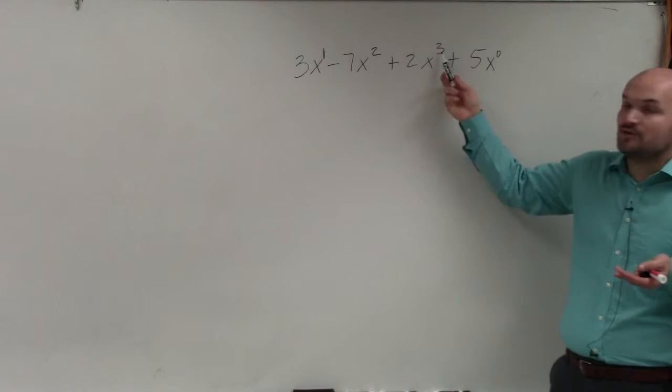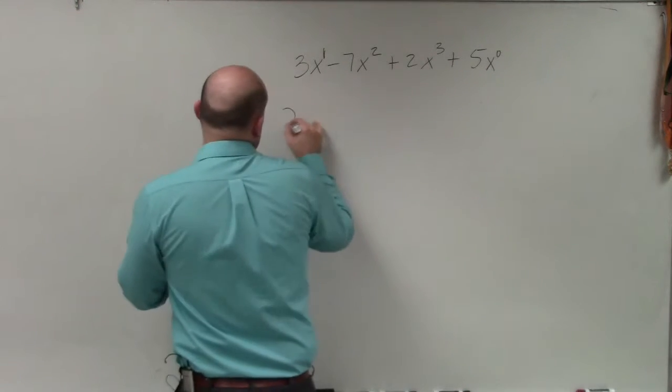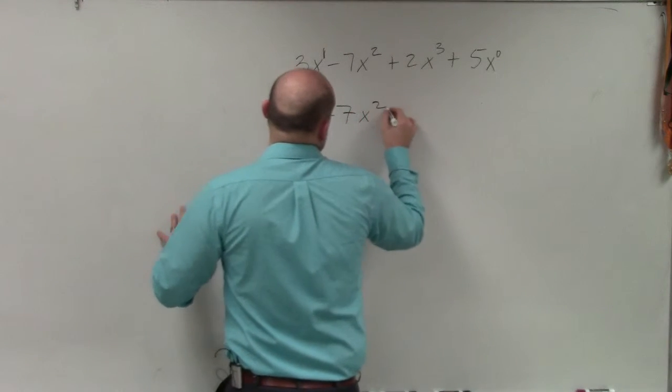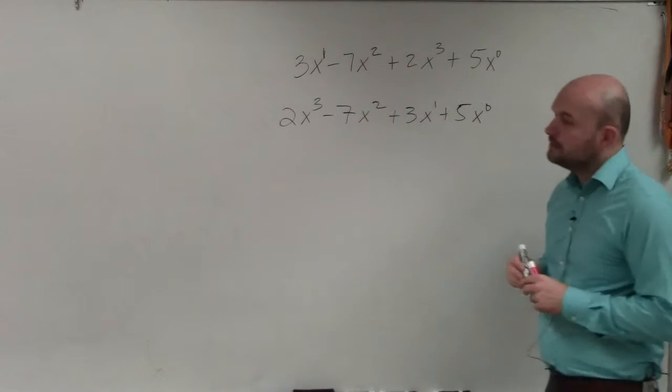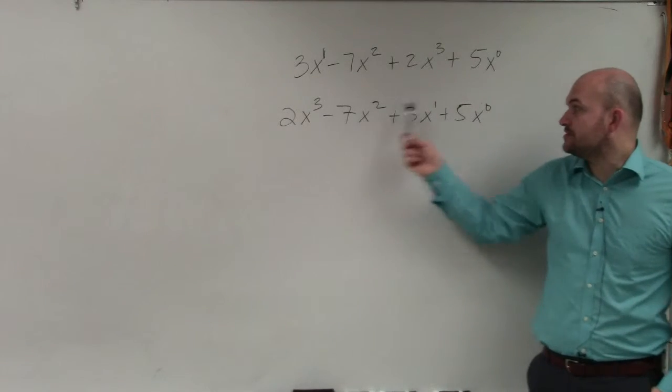What we're doing is I'm just going to write these with the highest exponent first, or the term with the largest power first. So you guys see how I just rewrote this as 3, 2, 1, 0?